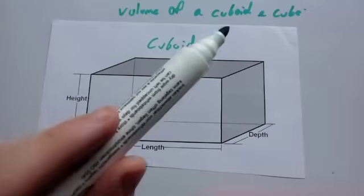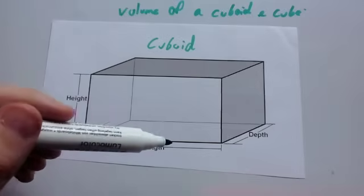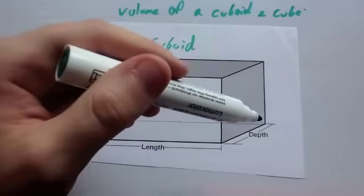We're now going to look at how to find the volume of a cuboid and a cube. Here's a cuboid. It's a 3D shape with a particular height, length, and depth. Sometimes this is called width.